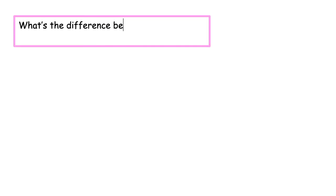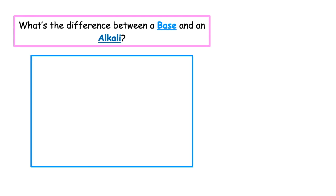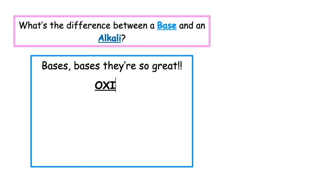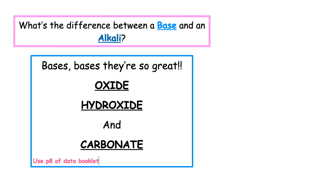So what is the difference between a base and an alkali? First, we need to know our little song to help us identify if we actually have a base: 'Bases, bases, they're so great. Oxide, hydroxide and carbonate.' If we have a metal oxide, a metal hydroxide, or a metal carbonate, we call them bases.